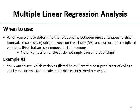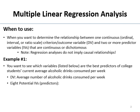For example, you want to see which variables are the best predictors of college students' average alcoholic drinks consumed per week. Your DV — which is sort of a weird name because it's not like a normal DV, but it is the thing you're predicting — is the average number of alcoholic drinks consumed per week. And you have eight potential predictors, eight potential IVs.